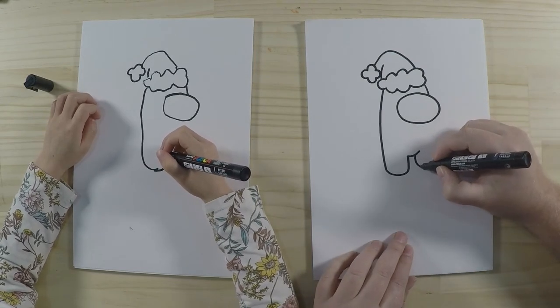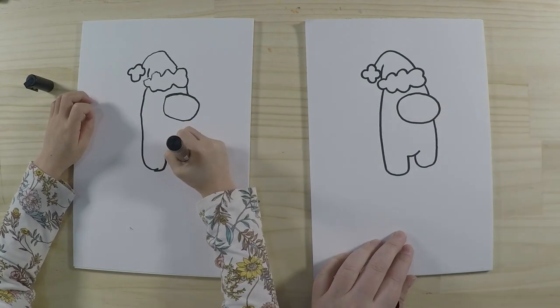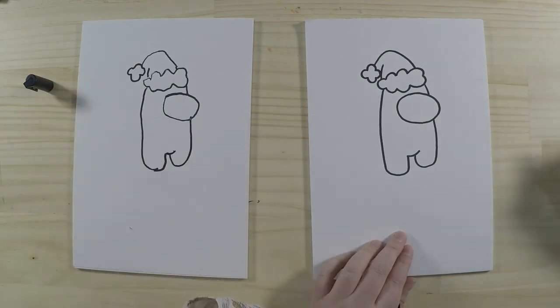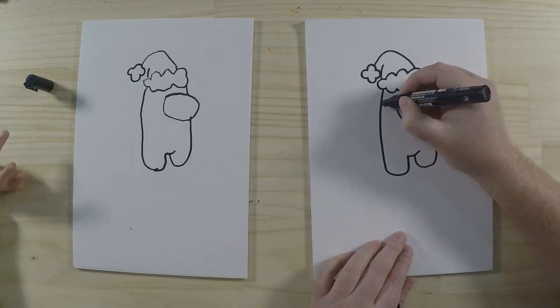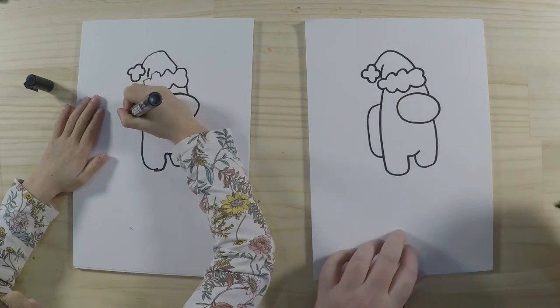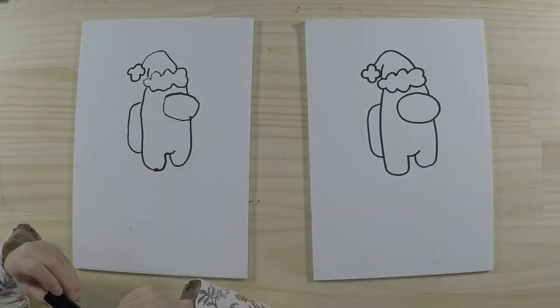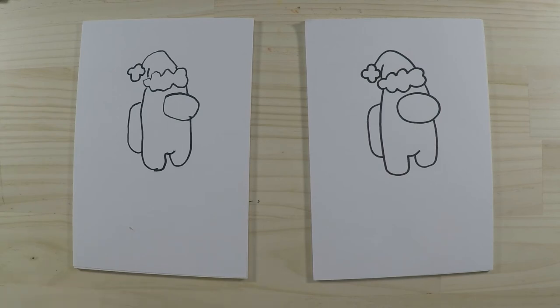Round like that, and we'll just go up there like that. And yeah, the last thing is his little backpack. That's a nice shape, just go down like that and round. Okay, so that's all the drawing done. The next part is to color.